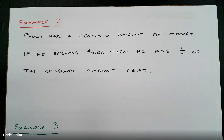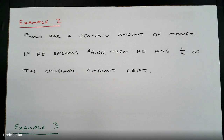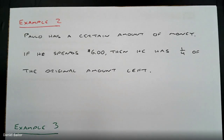This is Example 2. 'Paolo has a certain amount of money. If he spends six dollars, then he has one fourth of the original amount left.' We're going to take that sentence and turn it into a math equation. This requires us to translate, to change English into math. Copy down this sentence so you can make the changes with me.